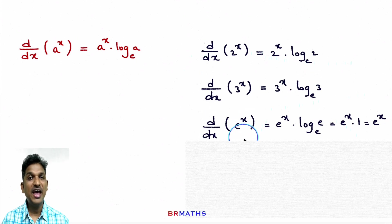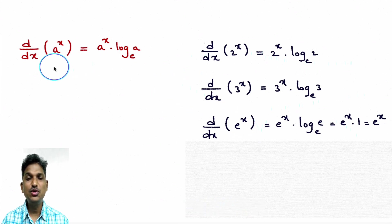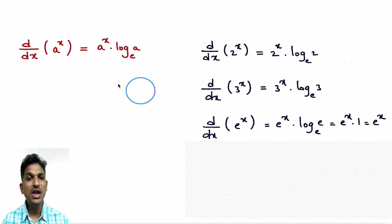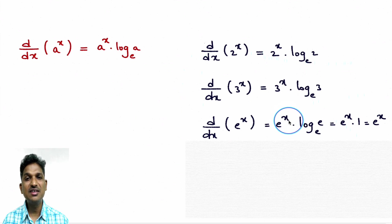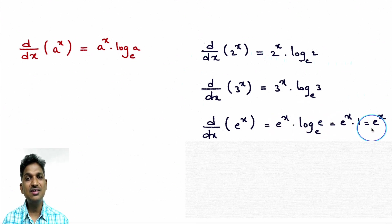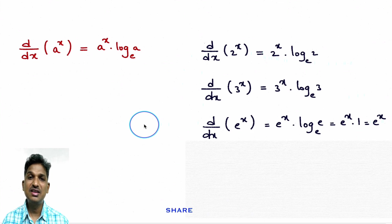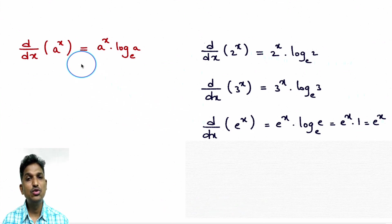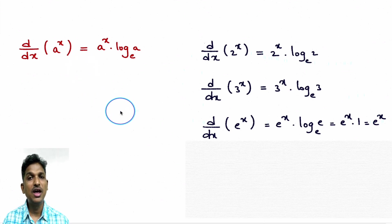Derivative of e power x — there is a direct formula, but let's verify using this formula. e is a fixed number, x is a variable, so applying: derivative of e power x is e power x into log e base e. From logarithms, log e base e equals 1. So e power x into 1 is e power x. Therefore derivative of e power x is e power x — the easiest formula among all 23.